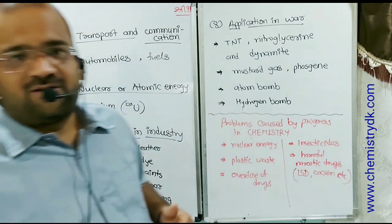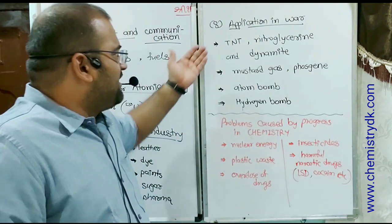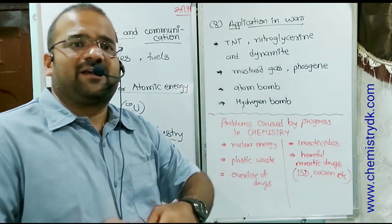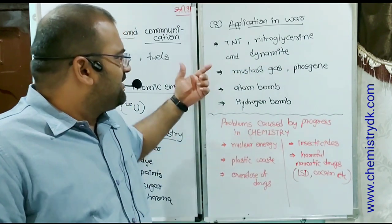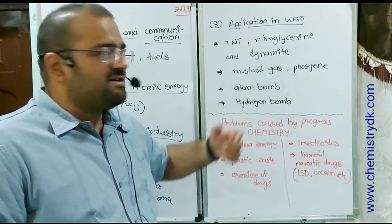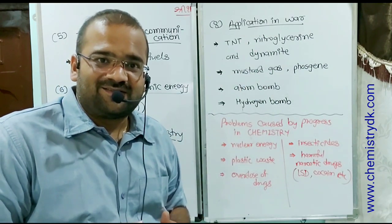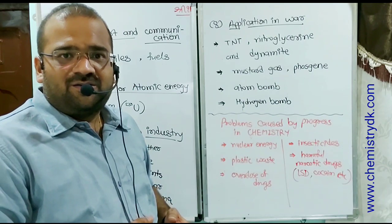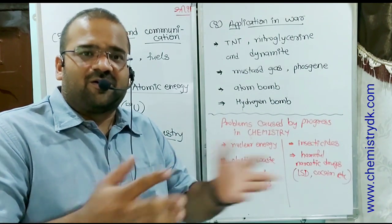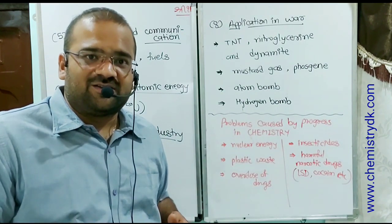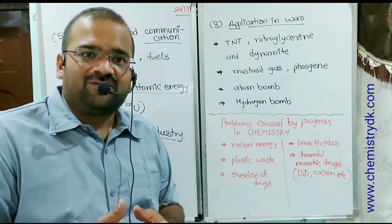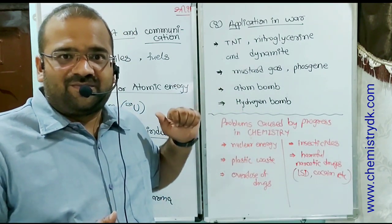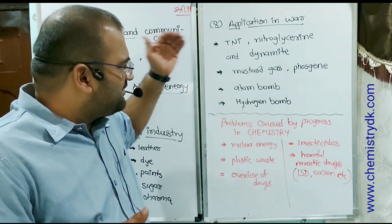The next application in war. Trinitrotoluene, nitroglycerin and dynamite are explosives. Mustard gas, phosgene are poisonous gases. Atom bomb, hydrogen bomb. But we don't want war at any situation, but somehow we have to use them. So there are chemicals in different areas.